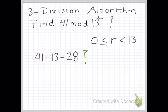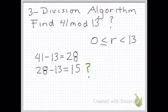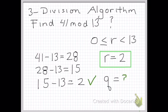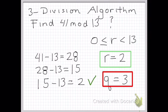So: 41 subtract 13 equals 28 — could that be our r? No, it's greater than 13. 28 subtract 13 equals 15 — could that be our remainder? No, 15 is greater than 13. 15 subtract 13 equals 2, and that lies between 0 and 13. So our remainder equals 2, our quotient q equals 3, and 41 mod 13 equals 2.